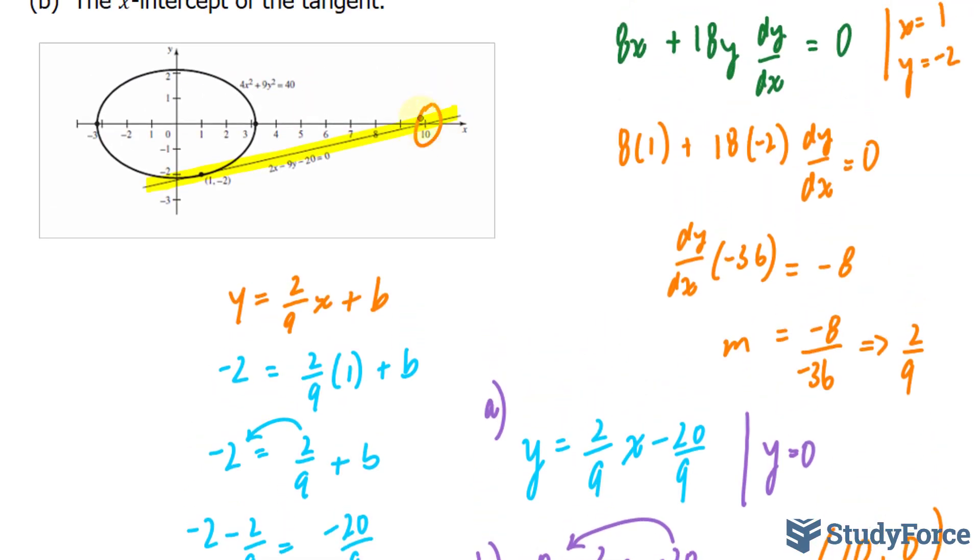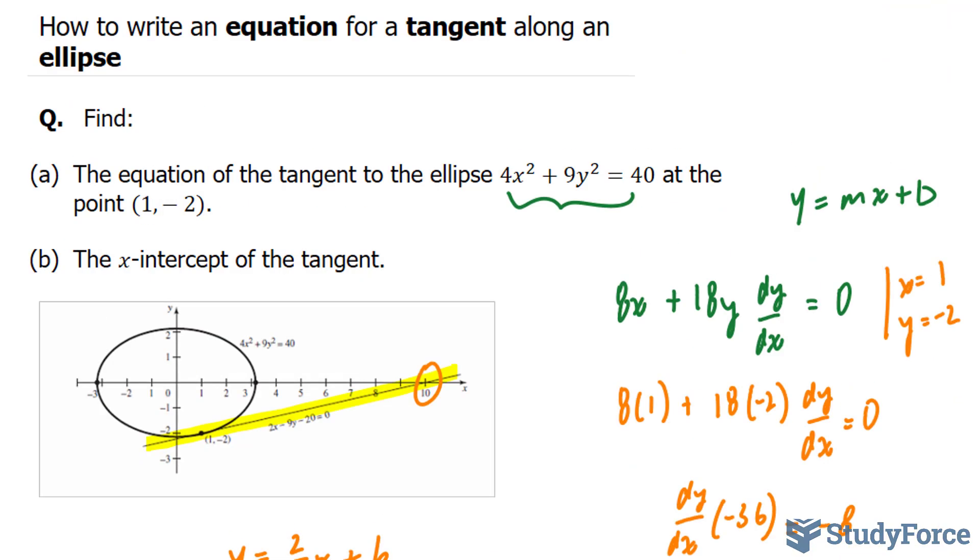Let's see if that makes sense. It does. And that's it. That is how to write an equation for a tangent along an ellipse.